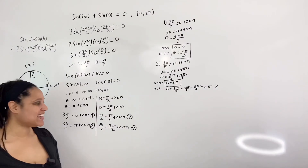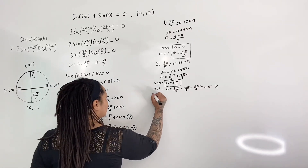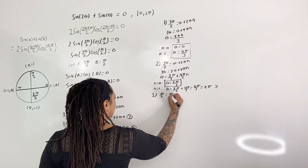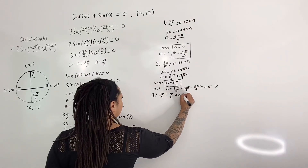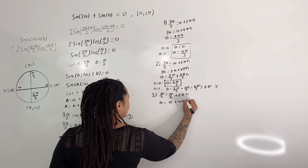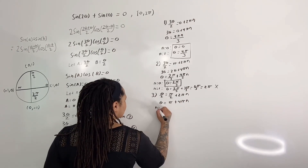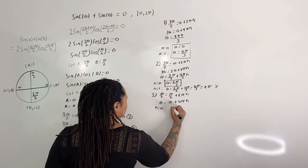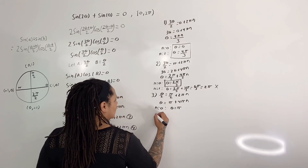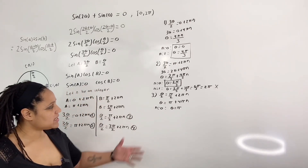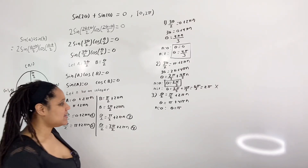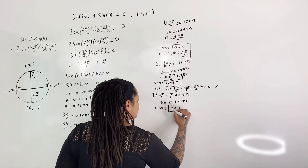Equation 3: theta over 2 equals pi over 2 plus 2 pi n, which means theta equals pi plus 4 pi n. If n equals 0, theta equals pi. If n equals 1, theta equals 5 pi, which is outside our interval. So the solution from Equation 3 is theta equals pi.